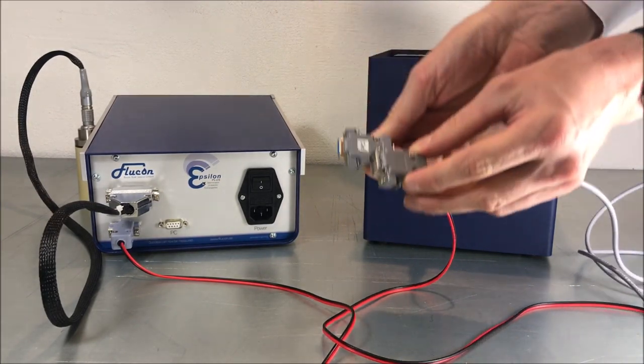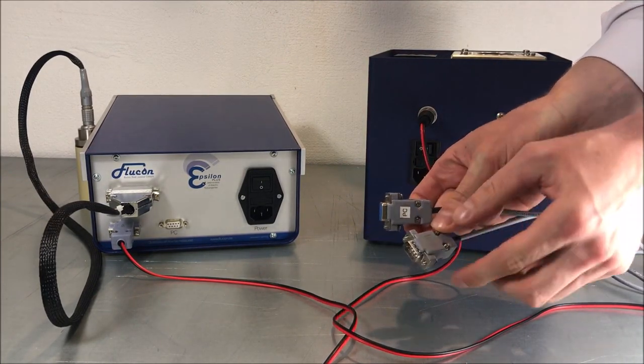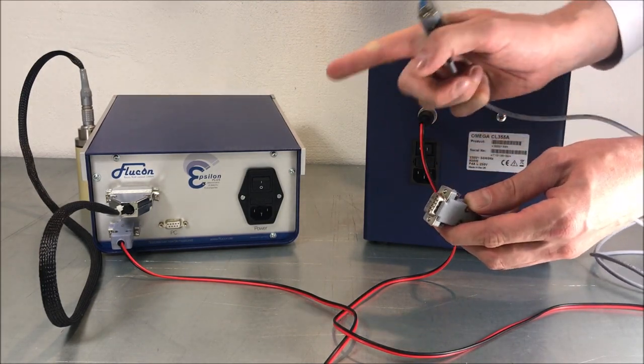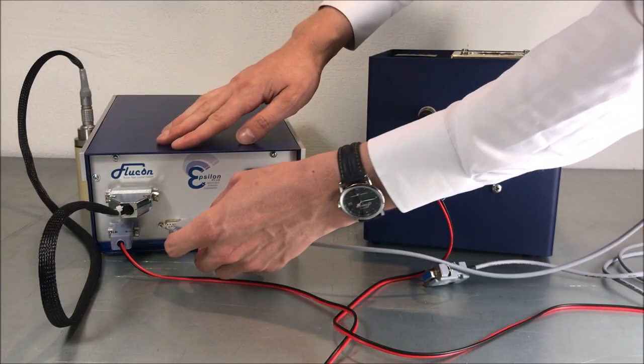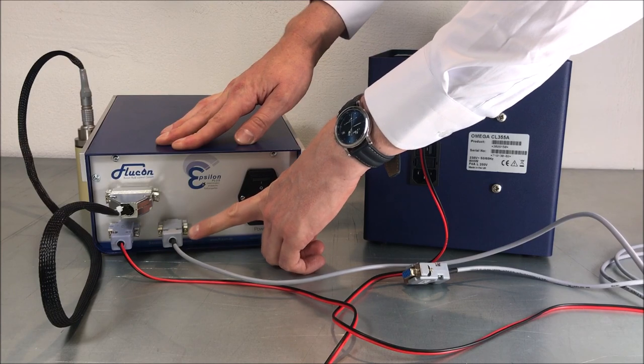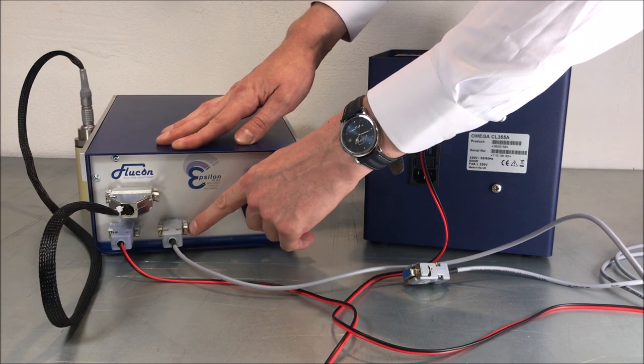Next up, take the data cable with the PC sticker on it which marks the computer side. So this is the plug that goes into your Epsilon Plus device. Once again, use the two screws to fasten the connection.